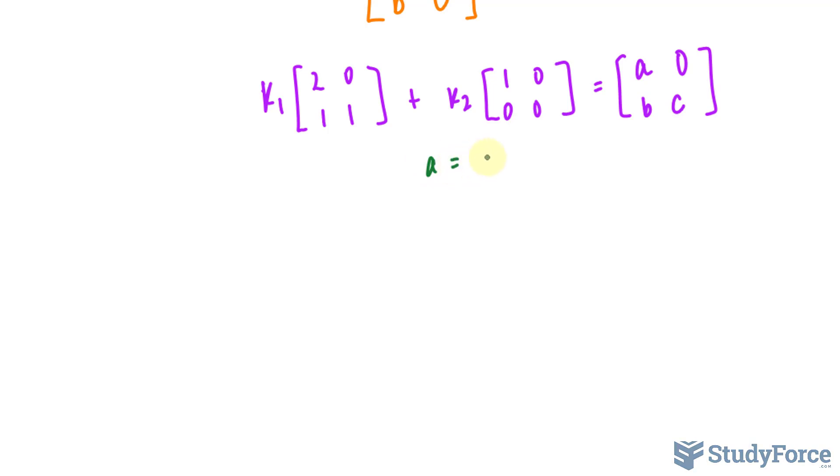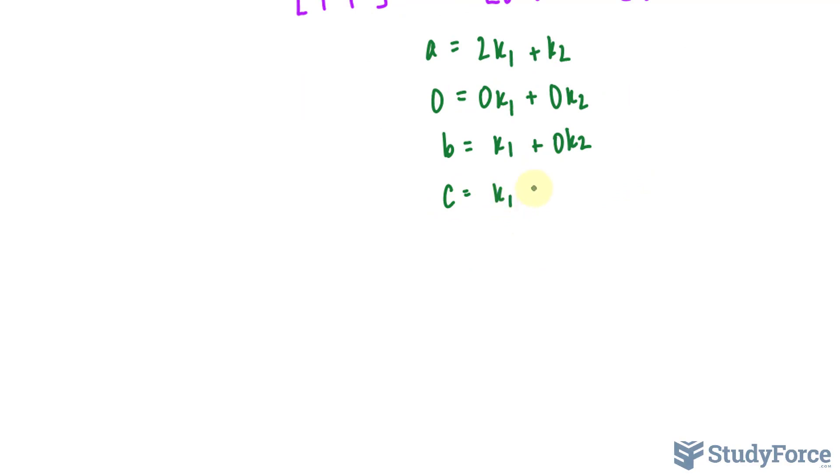So really quickly, we have the equations A is equal to 2K1 plus K2. I'm essentially equating each element by element. And then we have 0 is equal to K1 times 0 plus 0 times K2. That equals to 0 anyway. Okay, B is equal to K1 plus 0 times K2, and C is K1 plus 0 times K2. So I can cancel these out right now. I don't need to really focus on them at all.